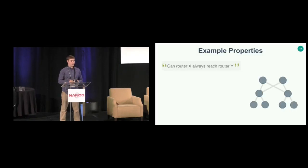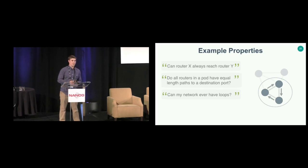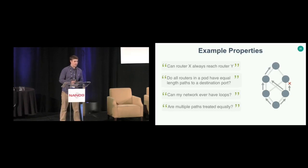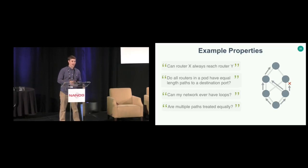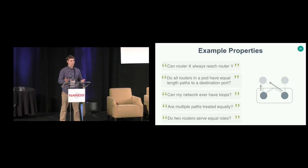There are also a number of other properties we can check with Minesweeper. We can check if multiple routers always have equal-length paths to a particular destination. We can check if any packet will ever experience a routing loop under any situation. We can check if, when using ECMP, you ever drop a packet on one path but not another — which might arise from a misconfigured access control list. We can also check if two routers serve equal roles, like two spine routers in a data center that should do the same thing for all possible inputs.